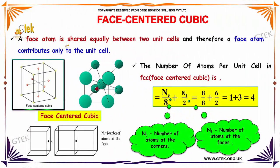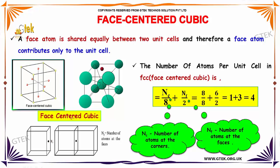A face atom is shared equally between two unit cells, and therefore a face atom contributes only 1/2 to the unit cell. The number of atoms per unit cell in FCC — here is the face atom. You have 6 face-centered positions: 6 faces in total.